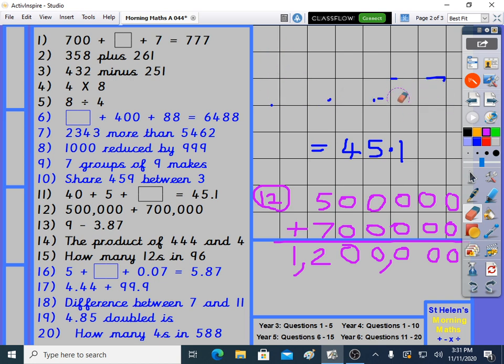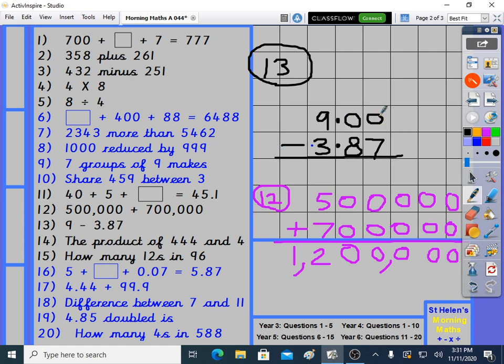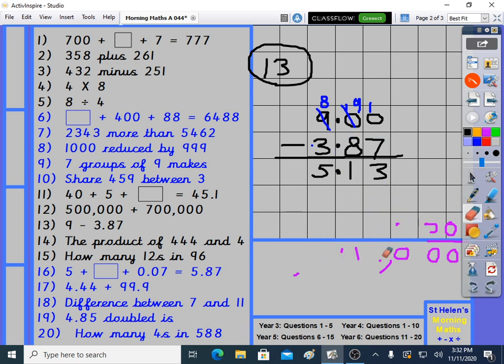Question 13: 9 take away 3.87. 9 is the biggest, 9 is bigger than 3 and a bit. 9 is 9.0. We can line up the decimal point, 3 and a bit. But to make it work you need this 0, 0, 0 on the end of the 9. 0 take away 7, we can't do, get some help. 10 take away 7 is 3. 9 take away 8 is 1. 8 take away 3 is 5. 5.13. Number bonds check there: 87 and 13 makes 100.